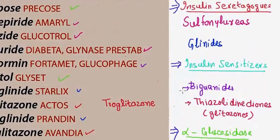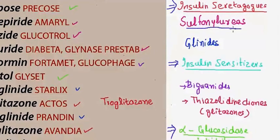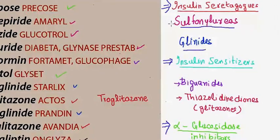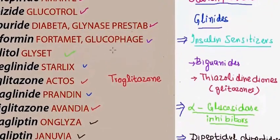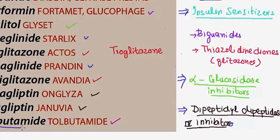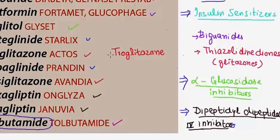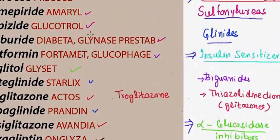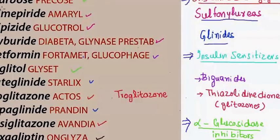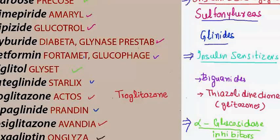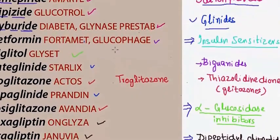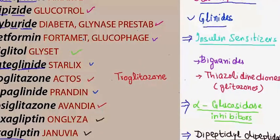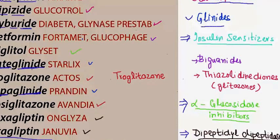In the insulin secretagogues we have two types of drugs: sulfonylureas and glinides. In the sulfonylureas there are two generations. The first generation has just one drug, tolbutamide. The second generation has three drugs, all starting with G: glimepiride, glipizide, and glyburide. In the glinides we have nateglinide and repaglinide.